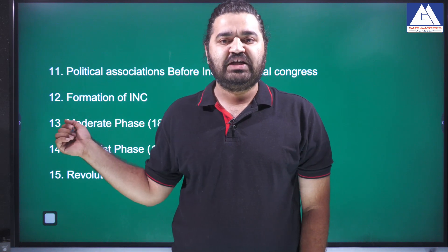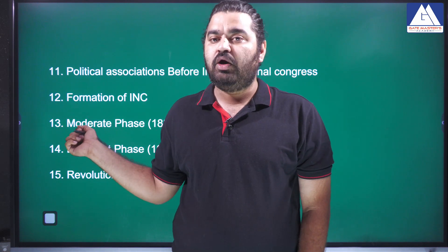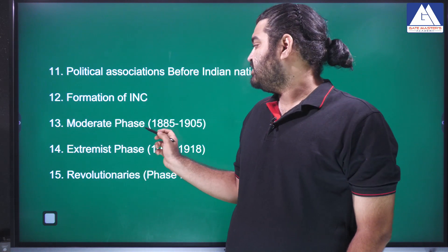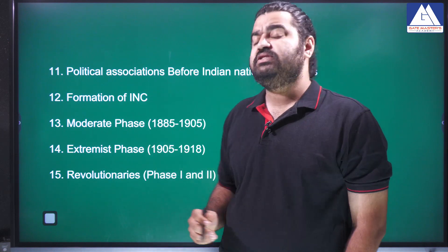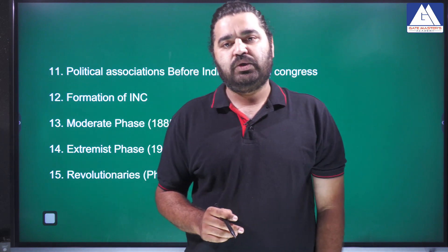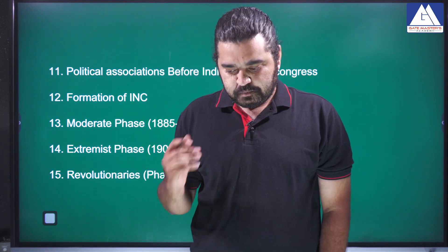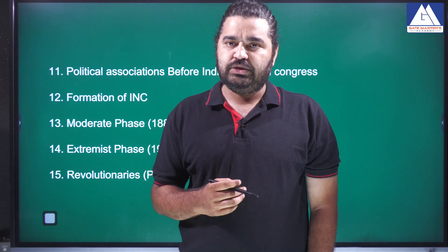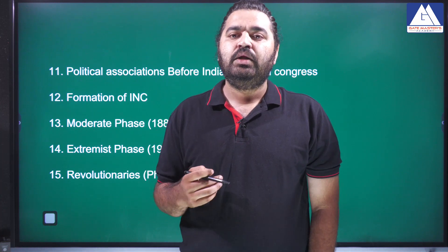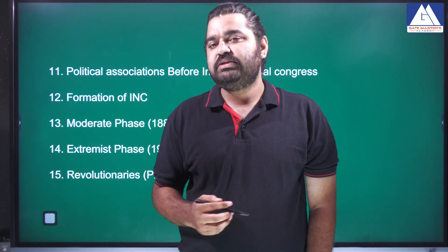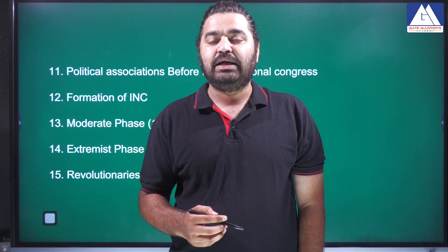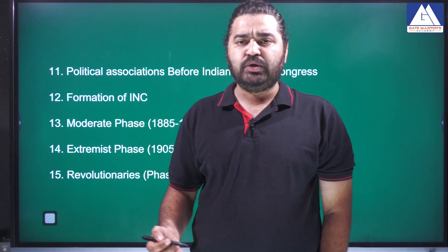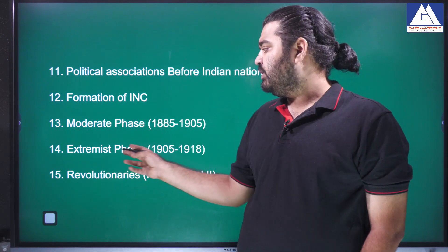Within the Indian National Congress there were mainly two factions: moderates and extremists. Moderates were the soft faction and extremists the hot faction. So we have the moderate phase and extremist phase. Moderate phase leaders include Dadabhai Naoroji and Gopal Krishna Gokhale. Extremist leaders include Bal Gangadhar Tilak, Lal-Bal-Pal, and Aurobindo Ghosh.